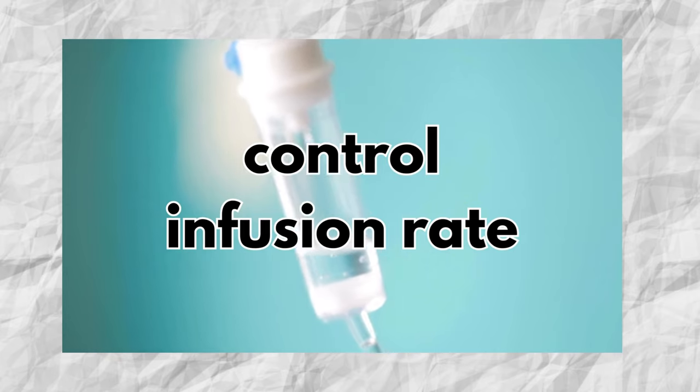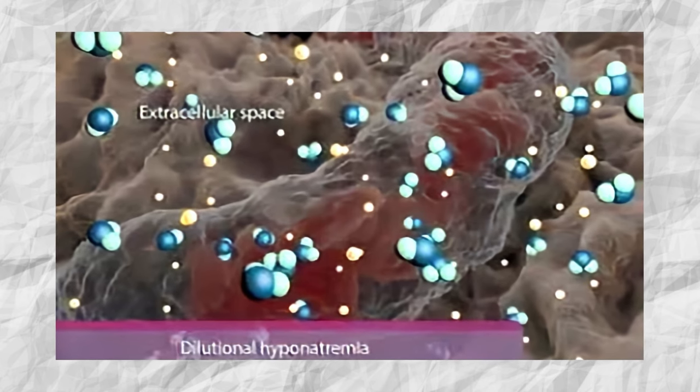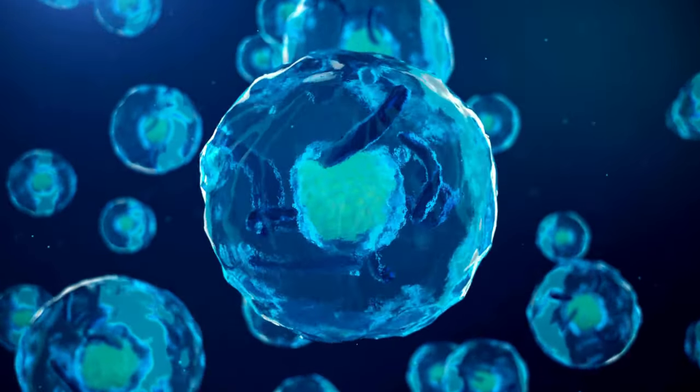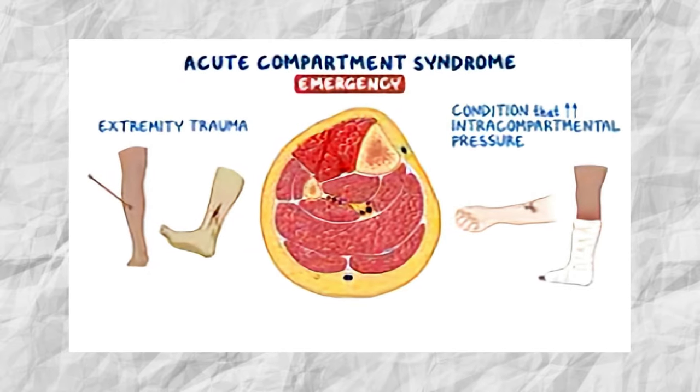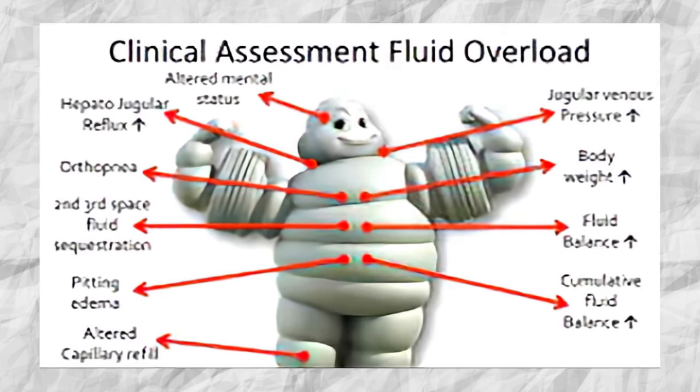The rate at which hypotonic solutions are administered should be controlled carefully, as rapid infusion of large volumes can increase the risk of dilutional hyponatremia and cerebral edema. In burn patients who have significant fluid loss through their wounds, these solutions can exacerbate problems by causing water to move into cells, further damaging already compromised tissue and potentially leading to compartment syndrome. The use of hypotonic solutions in burn patients can also increase the risk of generalized edema, contributing to respiratory and cardiovascular complications, particularly with extensive burns.